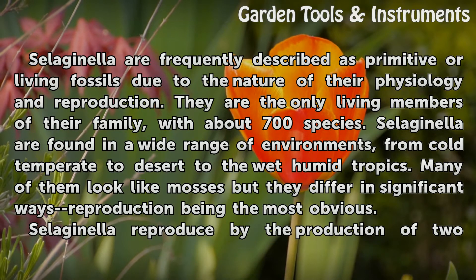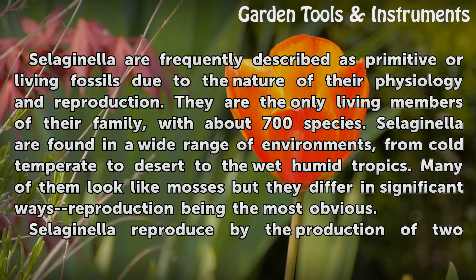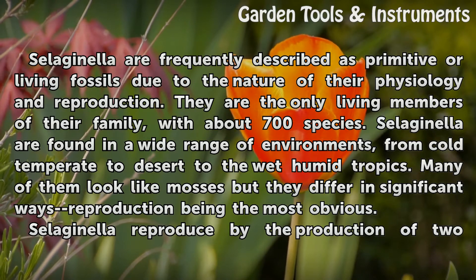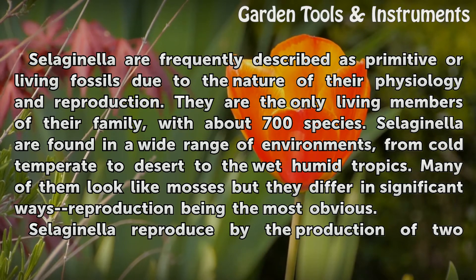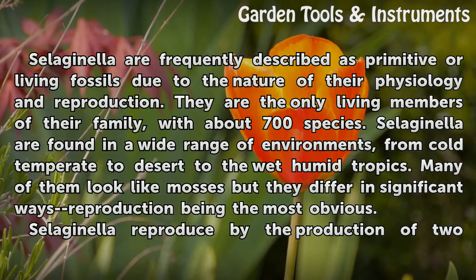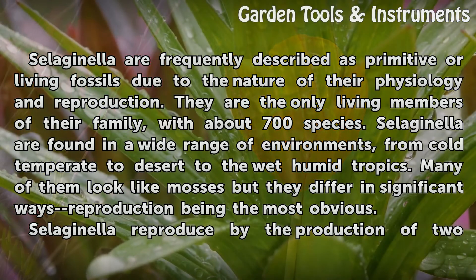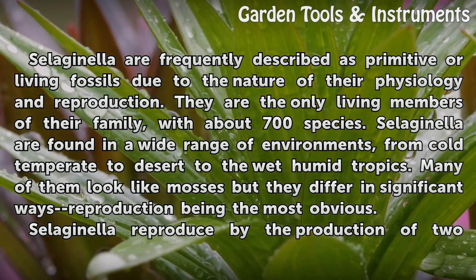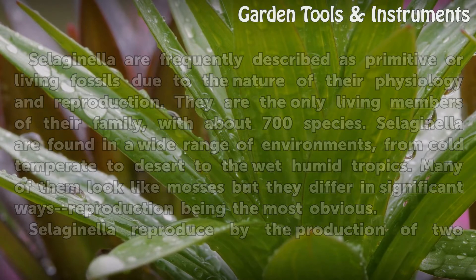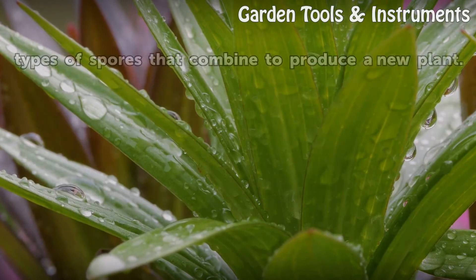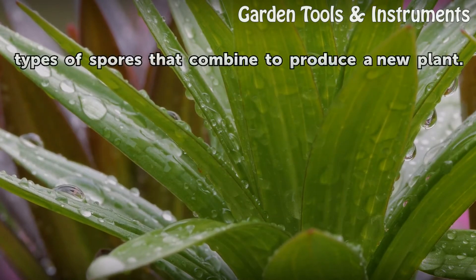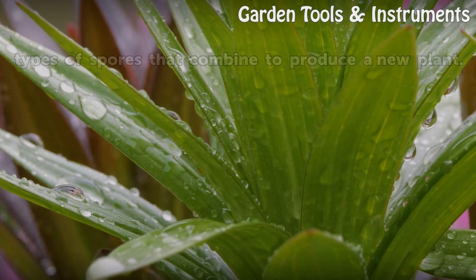Selaginella are found in a wide range of environments, from cold-temperate to desert to the wet-humid tropics. Many of them look like mosses but they differ in significant ways, reproduction being the most obvious. Selaginella reproduce by the production of two types of spores that combine to produce a new plant.